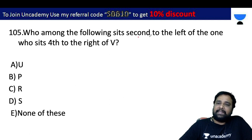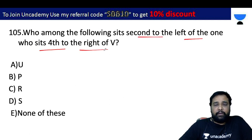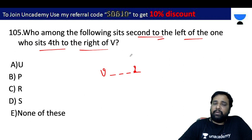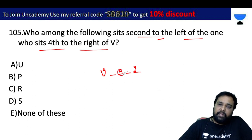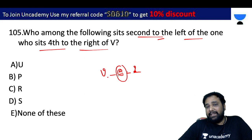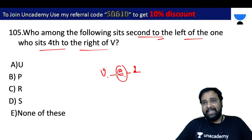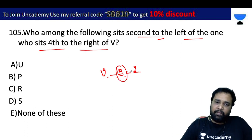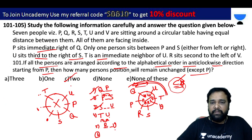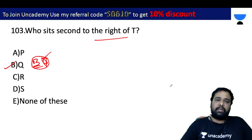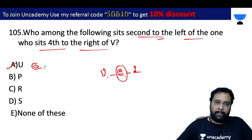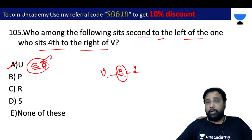Who among the following is the second left of the one who is the fourth right of V? Finding the fourth right of V and then taking the second left of that person gives the answer. The answer is U — U only is the right answer for problem number 1, question 5.